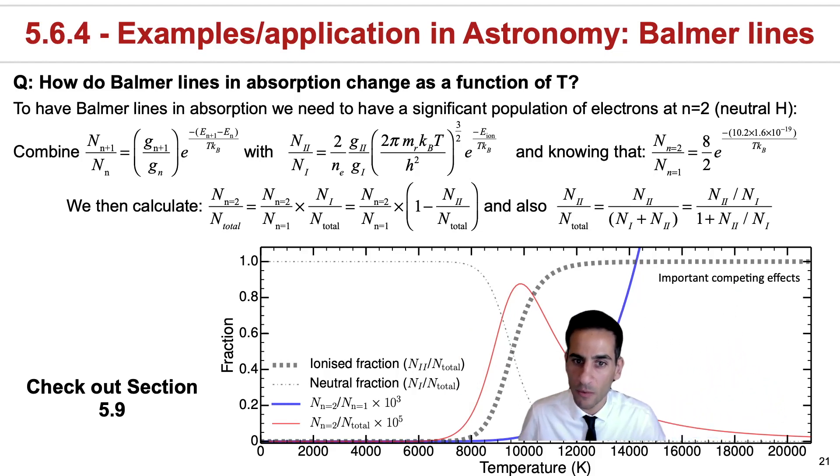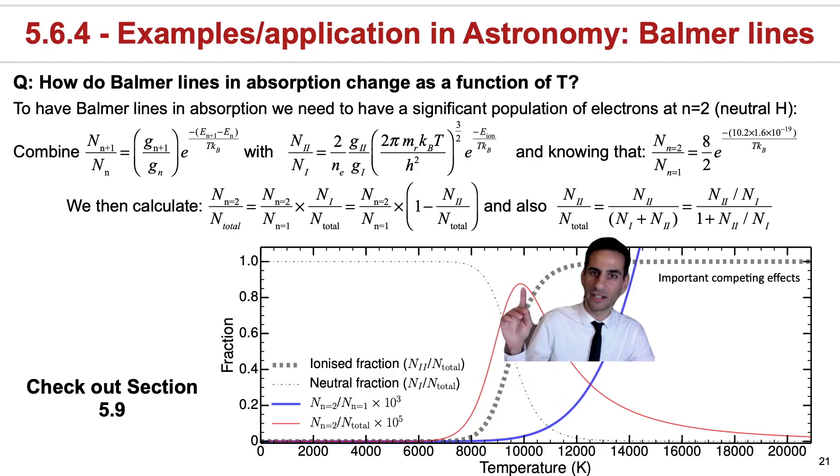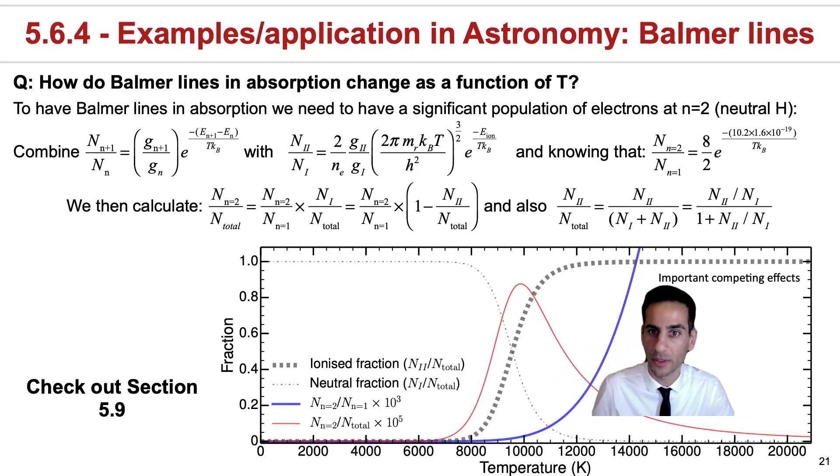As a consequence, what we have is as a function of temperature, Balmer lines will start to go up quite a lot. They reach a peak at around 9,000 to 10,000 Kelvin, but then instead of keep going up in intensity, they actually go down. Not because the ratio of n equals 2 to n equals 1 is not still going up, but because the number of neutral atoms is just getting lower and lower and lower.